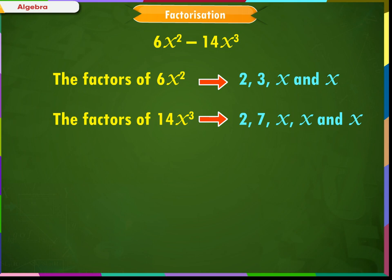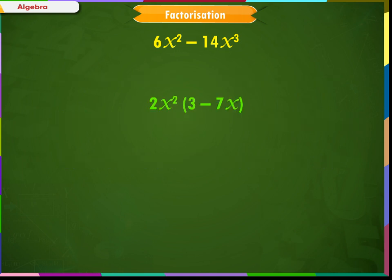We can see here that the numerical value 2 is common and the variables x and x are common. Therefore, the common factors of both terms are 2·x·x, which is 2x². So, we will write 2x² and then write the remaining terms inside the bracket. Thus, 2x²(3 - x) are the factors of the given expression.